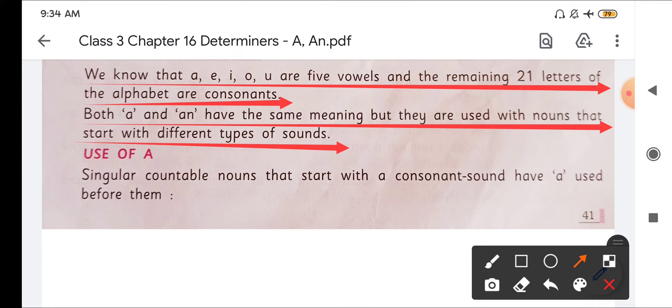Now we will see the use of a first of all. So here we see singular countable nouns that start with a consonant sound have a used before them. So whenever we use a in front of noun, at that time the noun should start with consonant sound.